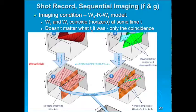You do a zero-lag cross correlation. You have two time series; you get the zero-lag cross correlation, and if it's zero, there's no reflector there. If it's non-zero, that's an estimate of the reflection coefficient. It's really just a dot product — we're not getting cross correlations at a whole range of lags, just that one correlation coefficient.